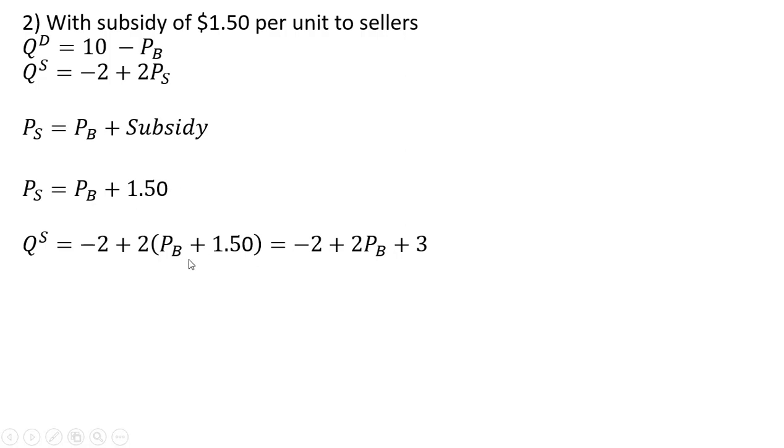And then just simplifying that, 2 times P subscript B and 2 times $1.50 is where that 3 is coming from. And then minus 2 plus 3, I'll simplify one more step here. So this step here becomes 1 plus 2 times the price that buyers pay.